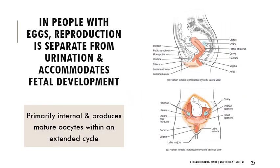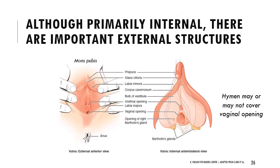The reproductive system in people with eggs is very separate from urination — I'll get back to that in a moment. It also has to accommodate fetal development, so there are many structural differences. It's primarily internal, whereas the reproductive system among people with sperm is primarily external. It produces mature eggs in an extended monthly cycle. Even though it's primarily internal, there are many external structures broadly called the vulva, which includes the clitoris — the glans clitoris is analogous to the head of the penis in terms of sensory tissue and nerve endings.